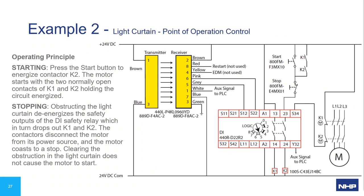In the second example, a light curtain transmitter and receiver powered by 24 V DC have two solid-state outputs going into a GSR DI monitoring relay. The relay outputs control the coils of two safety contactors that isolate the motor, with mechanically linked contacts on the contactors feeding back to the safety relay to confirm they opened on demand. To start, press the start button to energize contactor K2; the motor starts with the normally open contacts of K1 and K2 holding the circuit. Obstructing the light curtain de-energizes the DI relay outputs, dropping out K1 and K2, and the motor coasts to a stop. Clearing the obstruction does not cause the motor to restart — you must press the start button again.